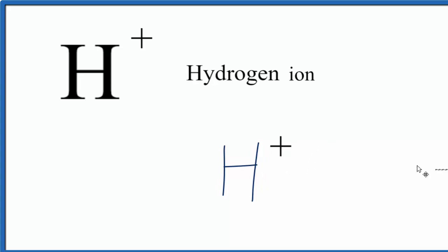We should put brackets around it though, to show that it's an ion. However, lots of times you'll just see it written as H+. So there's the Lewis structure for the hydrogen ion, but it gets a little more complicated.